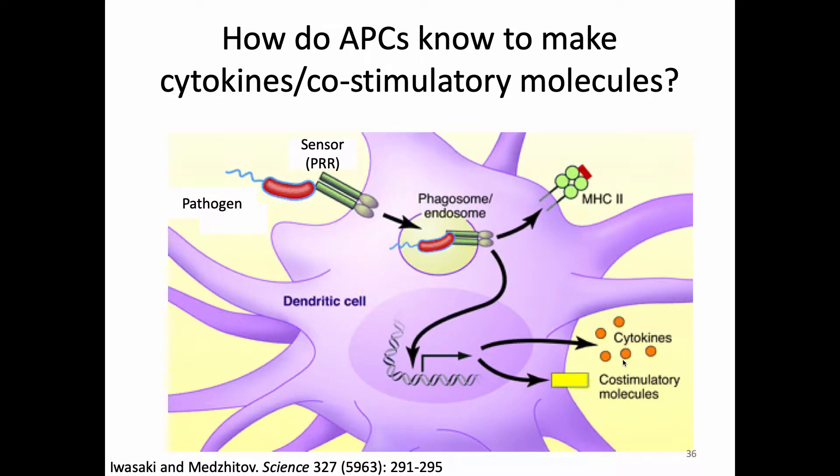We need to think about why the antigen-presenting cell would begin to make CD80, CD86, or co-stimulatory molecules. It turns out this happens because of signaling from PRRs. If a cell is presenting a foreign antigen, it will be making a co-stimulatory signal as a result of PRR stimulation. If it's presenting a self-antigen, there will be no PRR stimulation and therefore no co-stimulatory signal — just self-antigen.